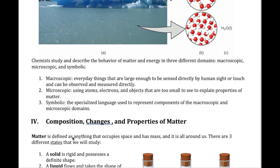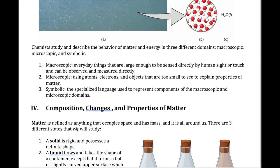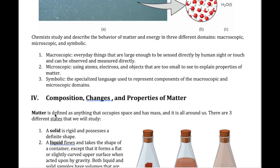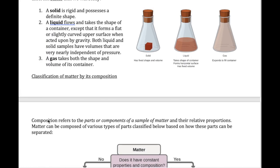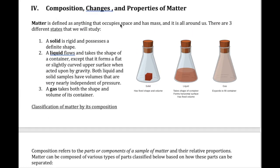Let's go further to understand how matter is composed. First off, what is matter? Matter is anything that occupies some space and has a mass. Basically everything around us — if you look in your room right now you'll see a lot of examples of matter: your desk, your computer, and even things you can't really see, like the air around you.